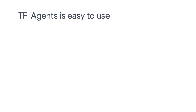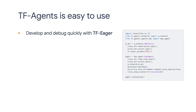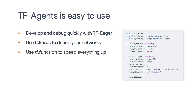TF Agents is built on top of TensorFlow 2, so all the easiness of TensorFlow 2 comes for free. You can use eager mode to quickly develop and debug your code. Keras helps you easily define your neural networks.